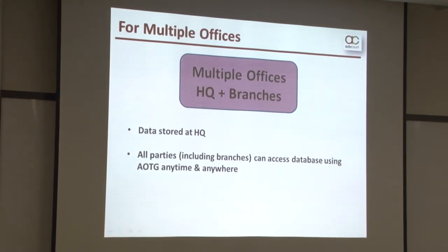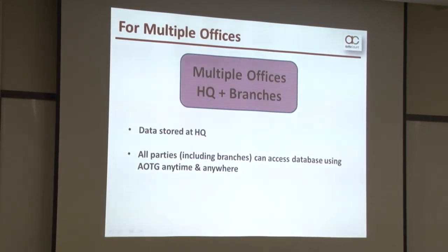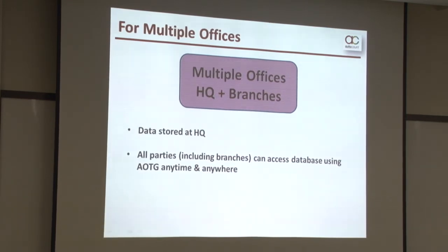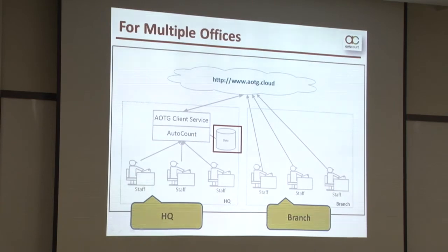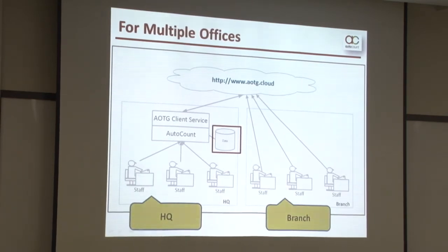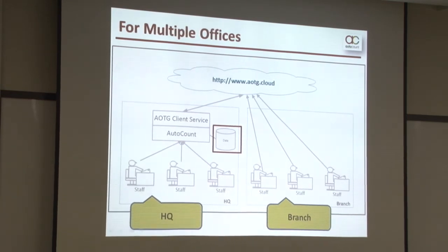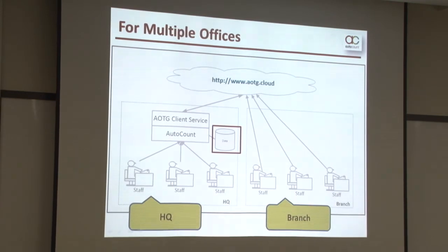The second category is for multiple offices. If you have multiple branches, it is very convenient — all parties including branches can access the AutoCount Accounting database using AOTG and perform transactions anytime and anywhere. Only HQ needs to purchase AutoCount Accounting. What the branches need to do is just subscribe to AOTG, and most importantly, have an internet service.